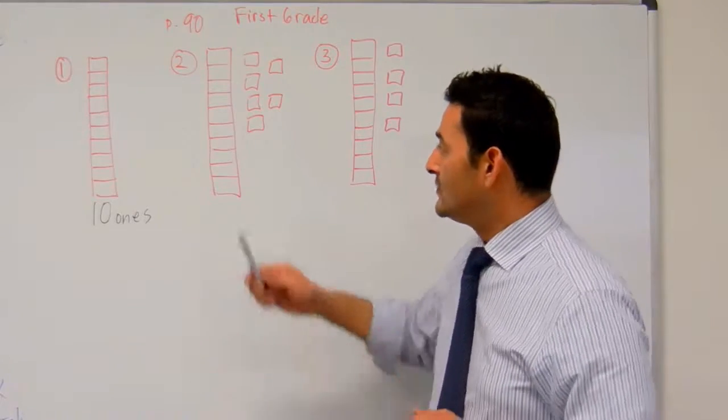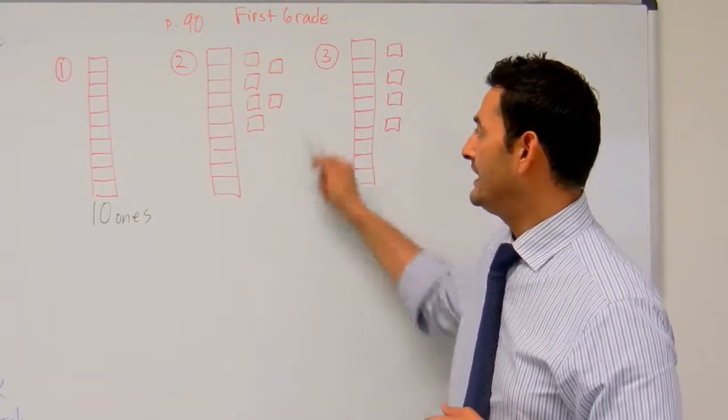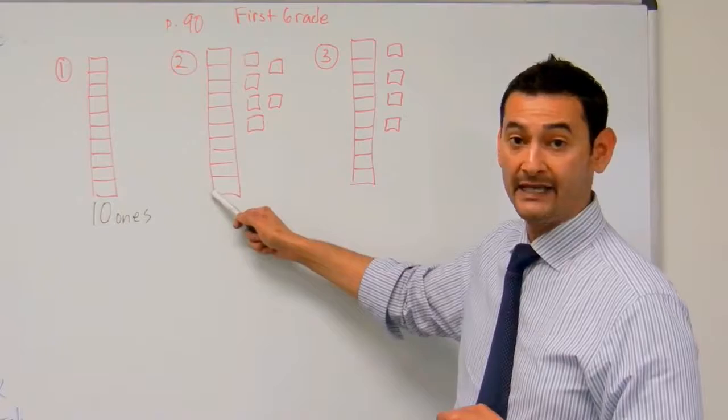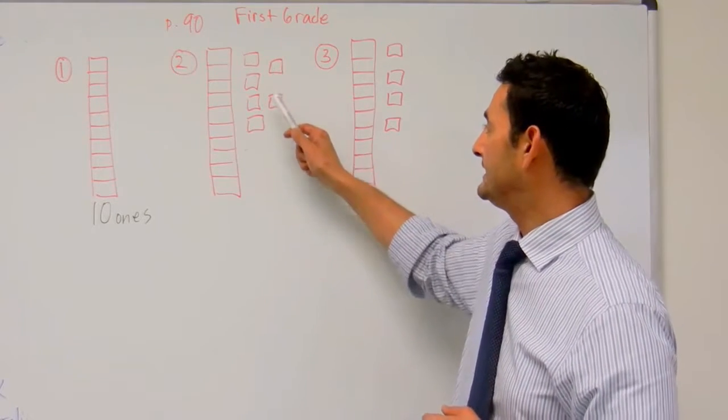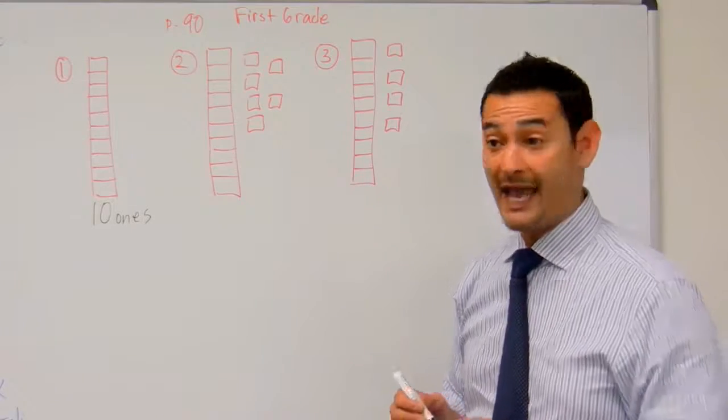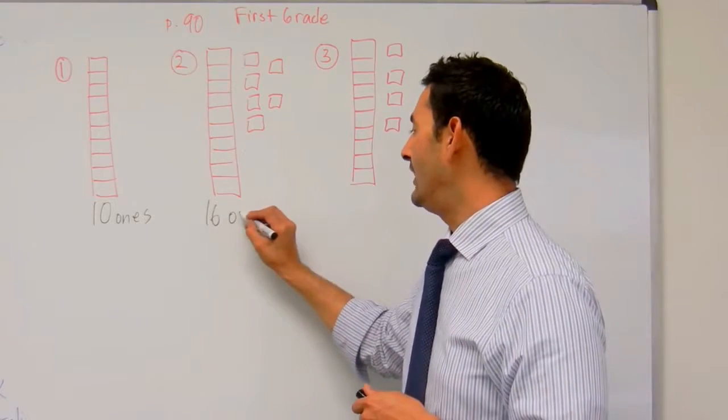Now let's take a look here. So how many ones do we have here? I know that's 10, so we can count up: 10, 11, 12, 13, 14, 15, 16. How many ones do I have? I've got 16 ones.